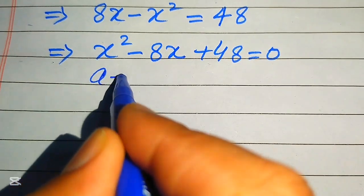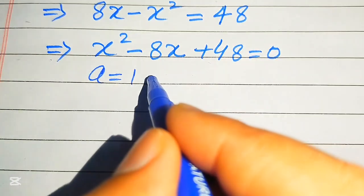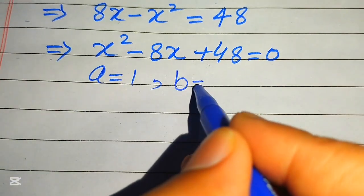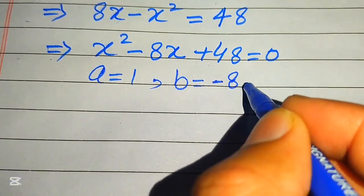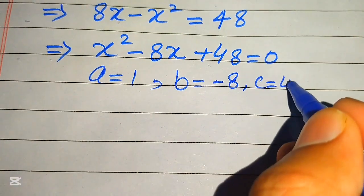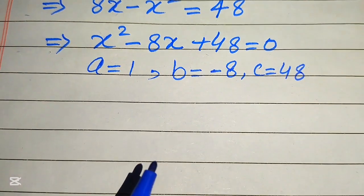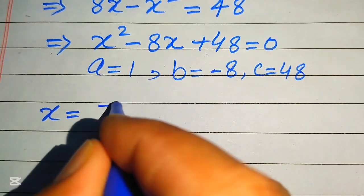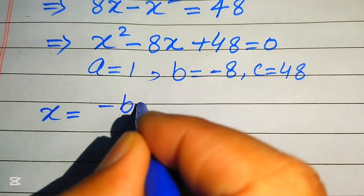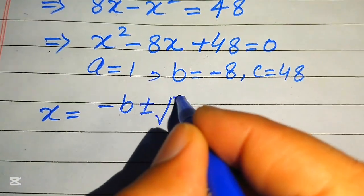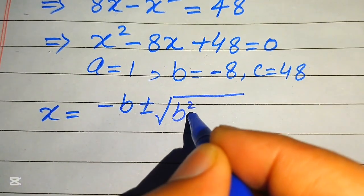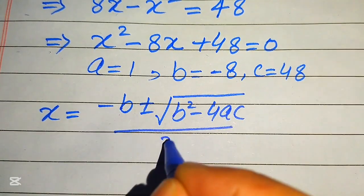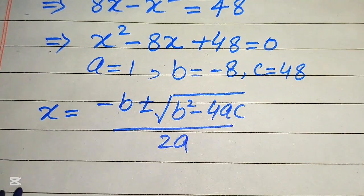First we need to write the coefficients of this equation: a equals 1, b equals minus 8, and c equals 48. We state the quadratic formula as x equals minus b plus or minus square root of b squared minus 4ac, divided by 2a.